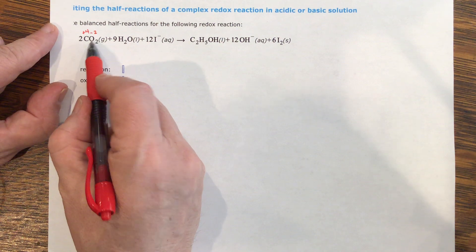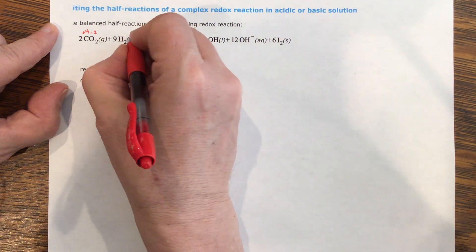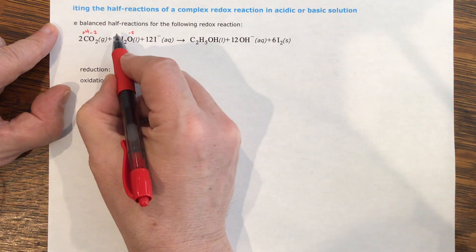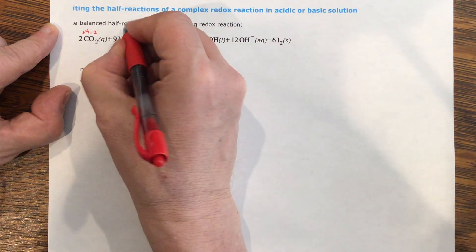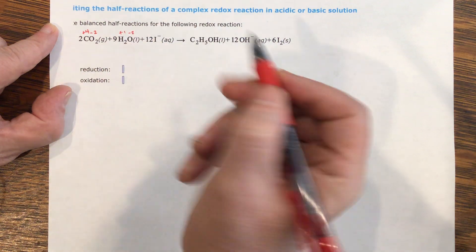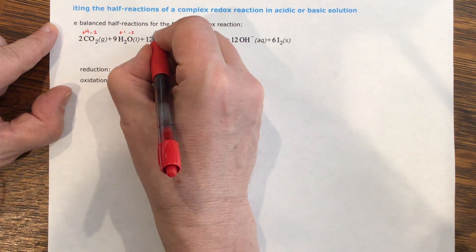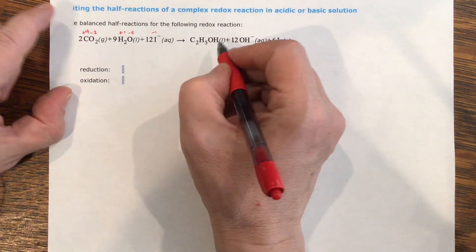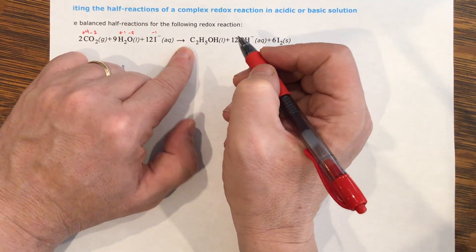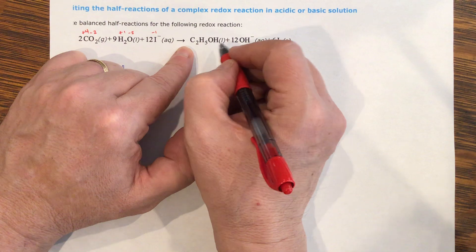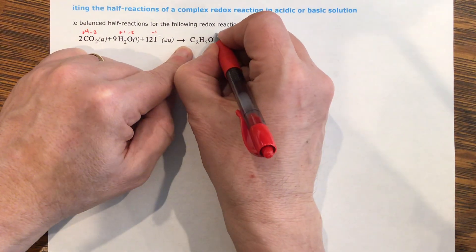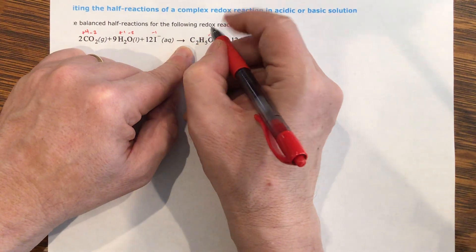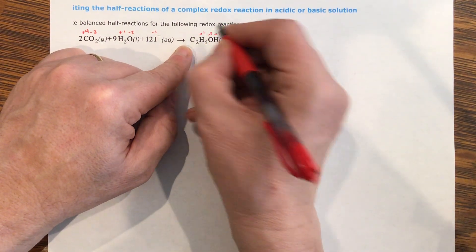The oxygen is negative two. Same thing here, this is negative two. Hydrogen almost is positive one, and I've got two positive ones, so it balances. Iodine is given, it's got the charge already, so it's minus one.